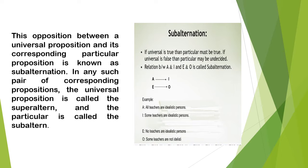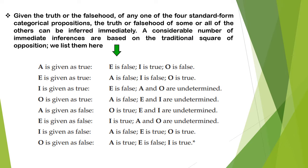In any such pair of corresponding propositions, the universal is called the superaltern and the particular is called the subaltern. For example, from the A proposition 'All teachers are idealistic persons' it follows that 'Some teachers are idealistic persons.' Similarly, from the E proposition 'No teachers are idealistic persons' it will naturally follow that 'Some teachers are not idealistic persons.'